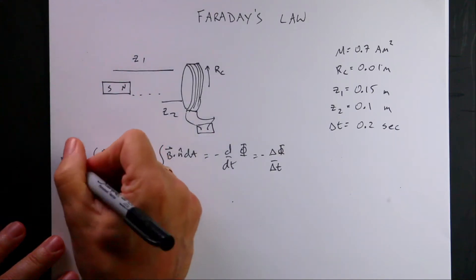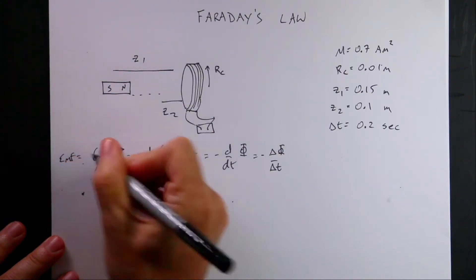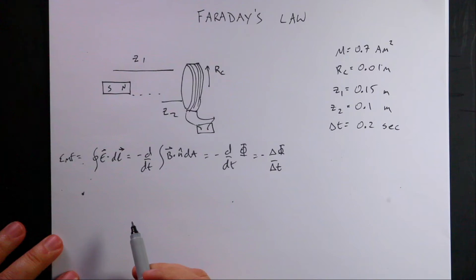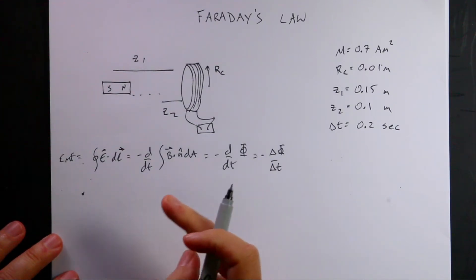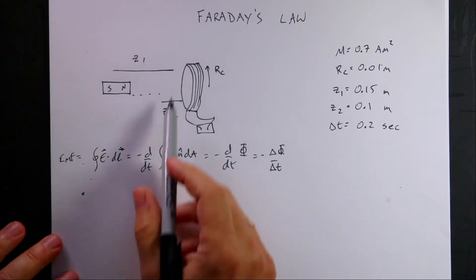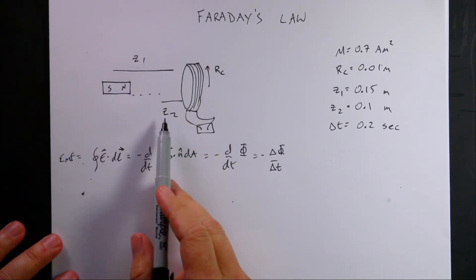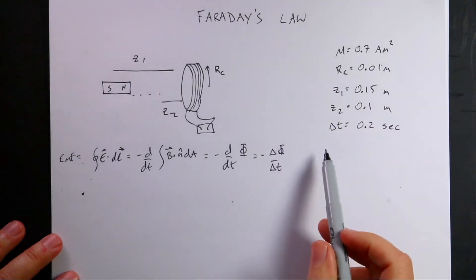Okay, because this is EMF. EMF is integral E·dL. That's all I need to do. So let's calculate the flux at Z1 and Z2. So I've given some parameters here.